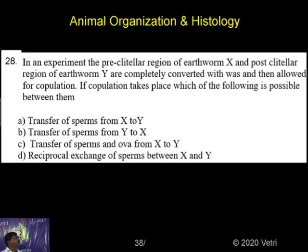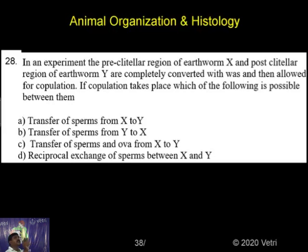In an experiment, the pre-clitellar reagents of earthworm X and post-clitellar reagents of earthworm Y — the earthworm clitellum is presented. Pre-clitellar having X, post-clitellar having Y, are completely converted with worms and then allowed to operate. Read the question: completely converted with worms all over the copulation. If the copulation takes place, what is possible between them?